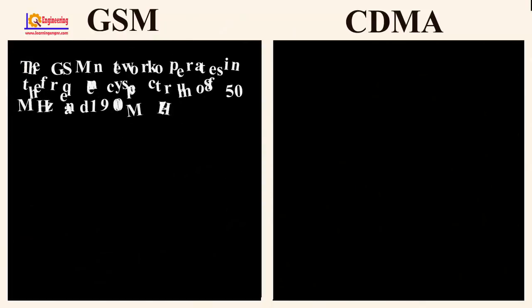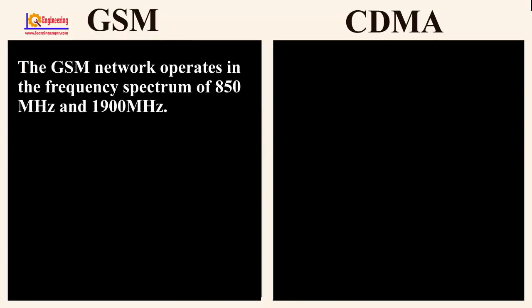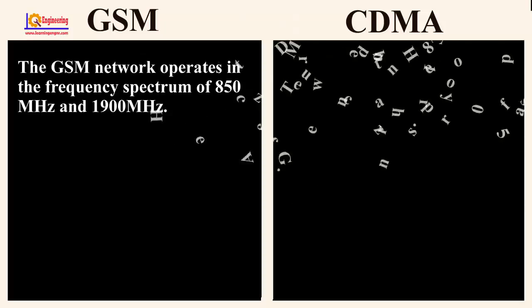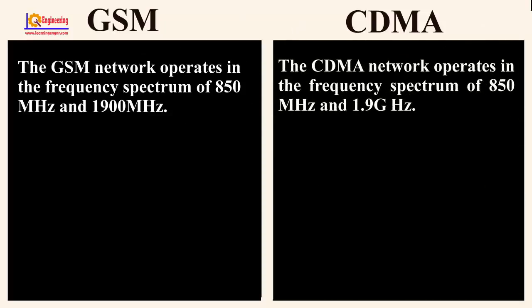The GSM networks operate in the frequency spectrum of 850 MHz and 1900 MHz. The CDMA network operates in the frequency spectrum of 850 MHz and 1.9 GHz.